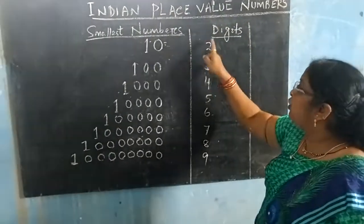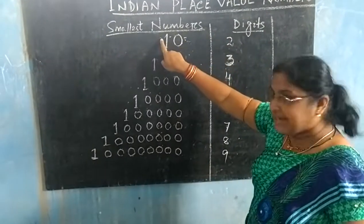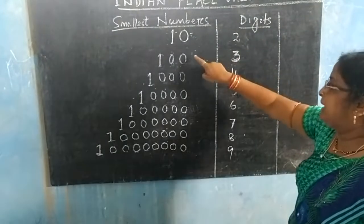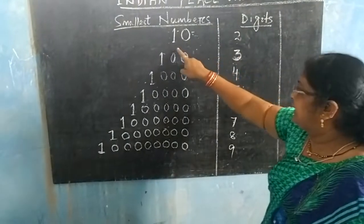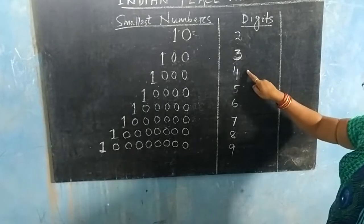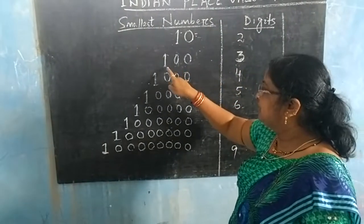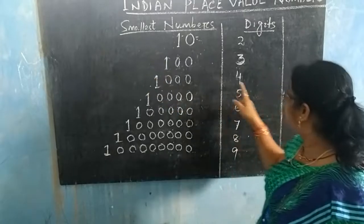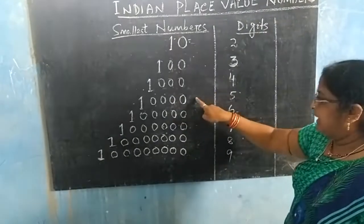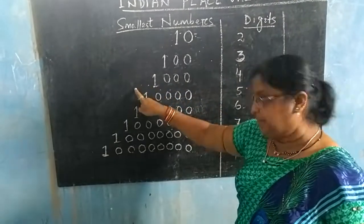Here, 2-digit number: 1st and 2nd. Next is 3-digit number: 1st, 2nd and 3rd. Next is 4-digit number: 1, 2, 3 and 4. Similarly, 5-digit number: 1, 2, 3, 4 and 5.